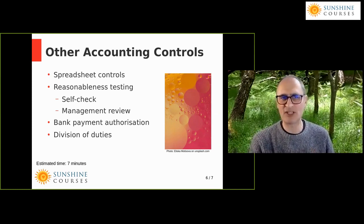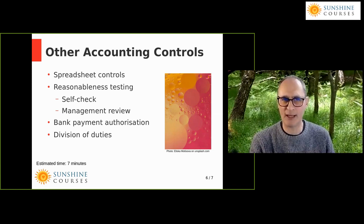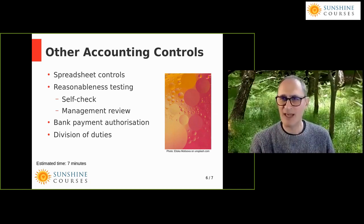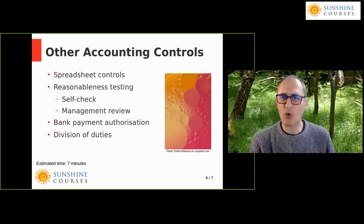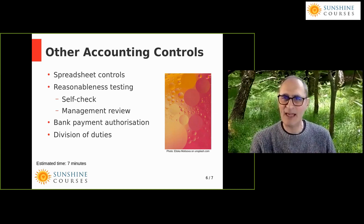One of the functions of management review is to make sure you've identified entries correctly — management will know what the figures should look like. Another important accounting control is ensuring that the person authorizing payments is different from the person recording them. This is because it's very easy to create fraud — as happened at Enron, where the person authorizing wasn't sufficiently separated from the person recording. You want to limit how much authorization different people have, to stop erroneous payments.